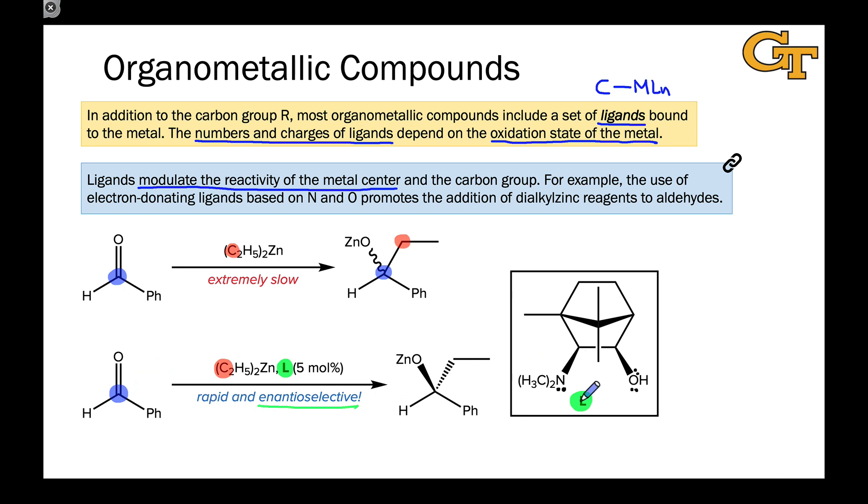And because the coordination turns the zinc complex into a chiral molecule, as long as we have L in enantiopure form, in other words as a single enantiomer, we should expect selective generation of one of the two possible enantiomers in this addition reaction.